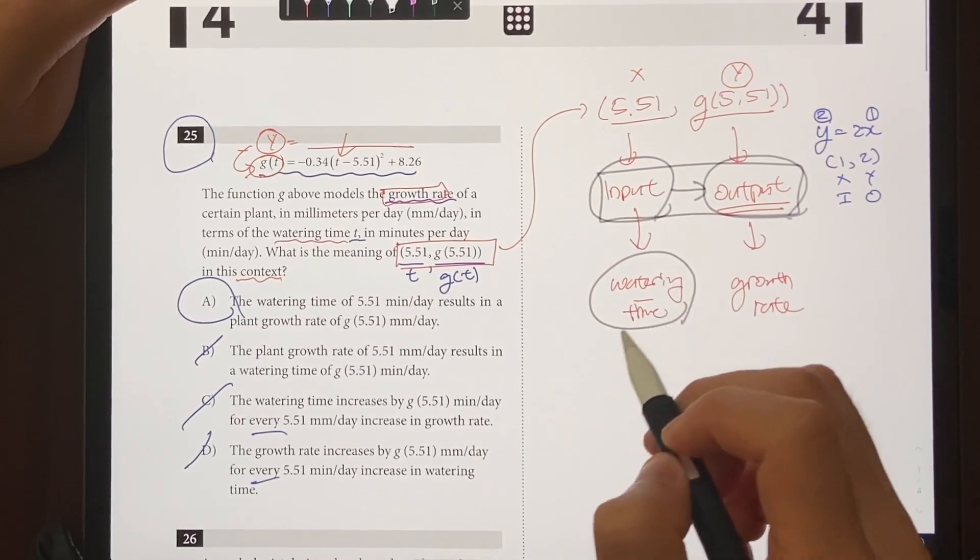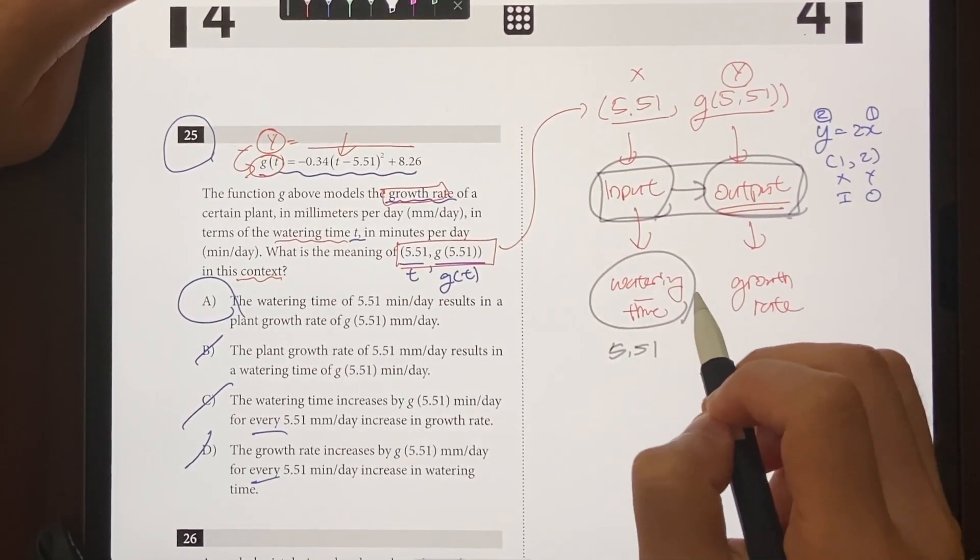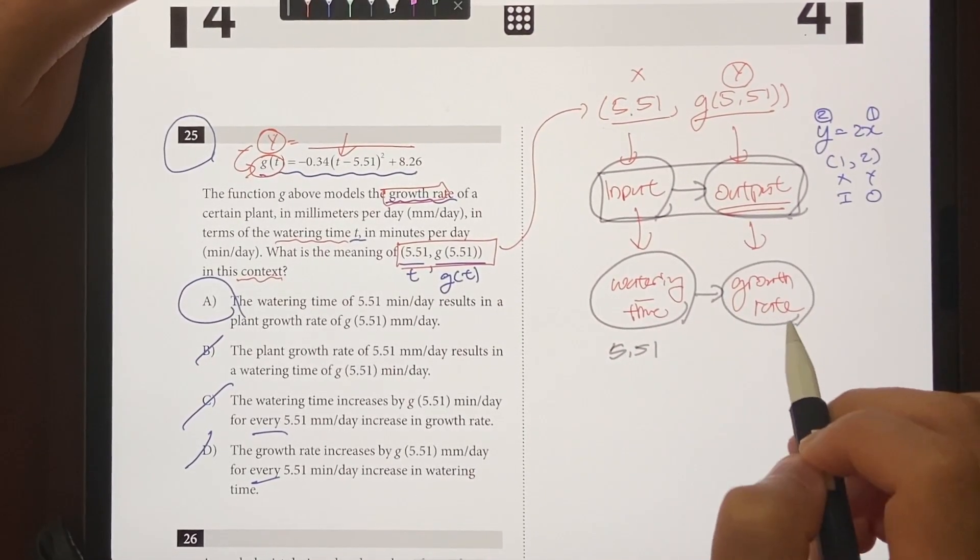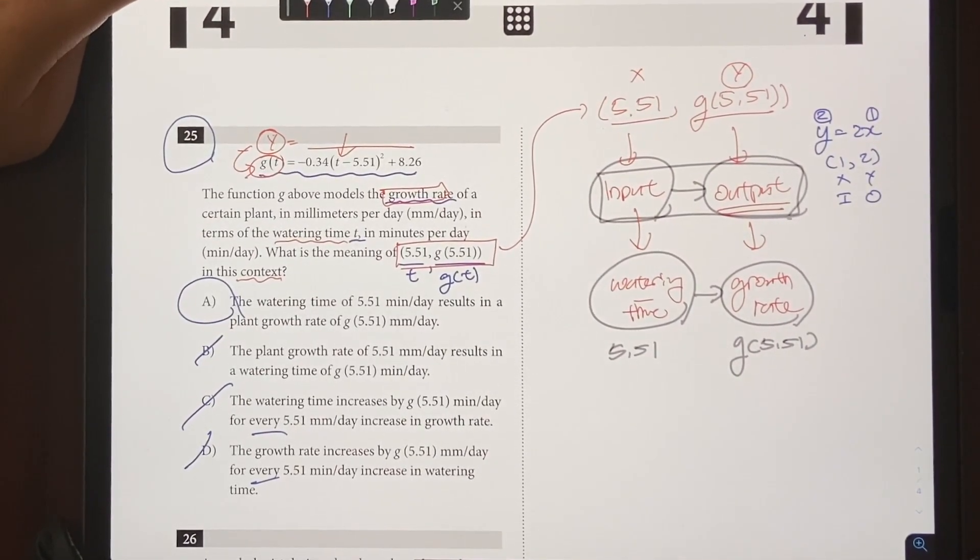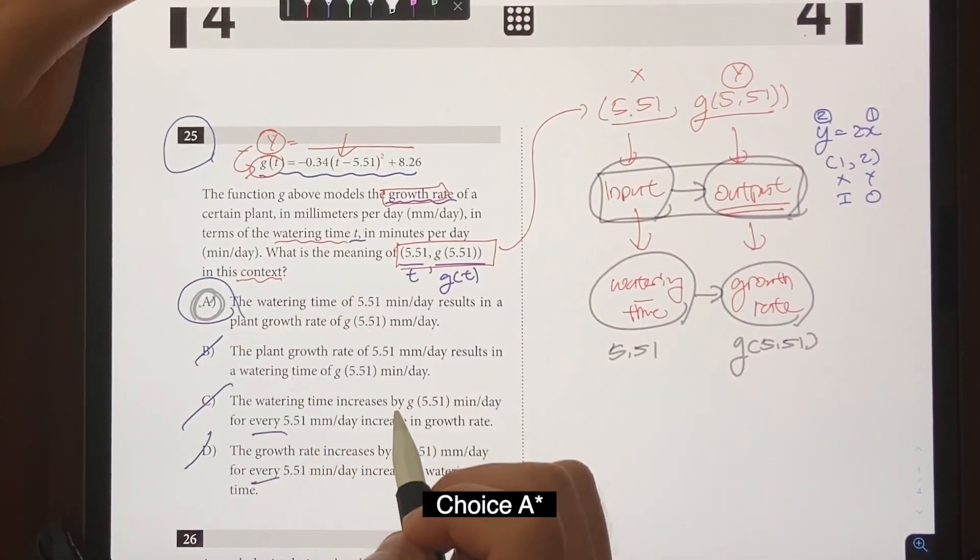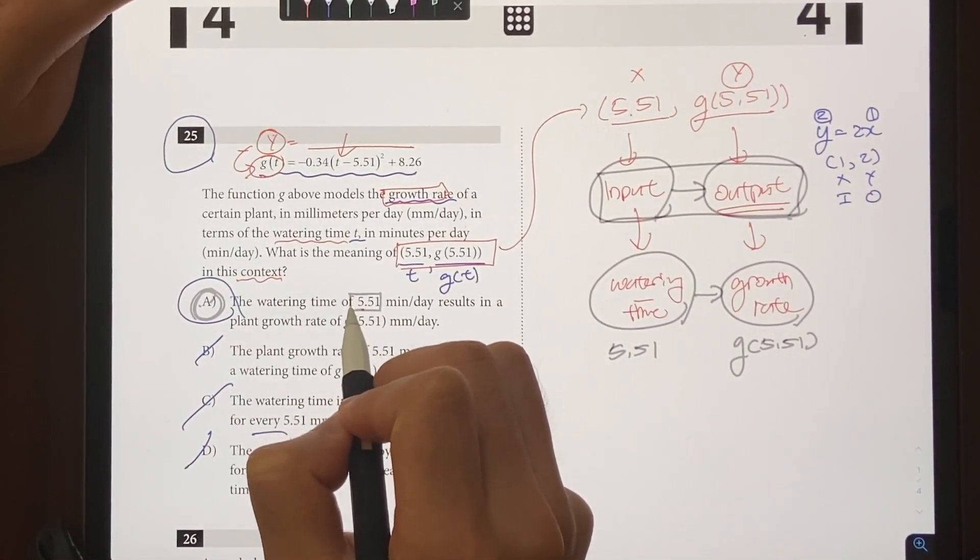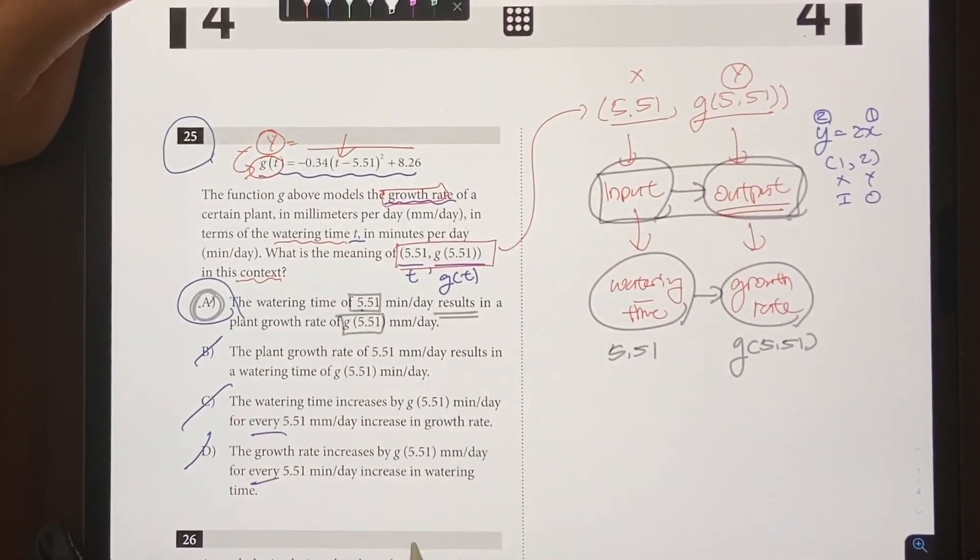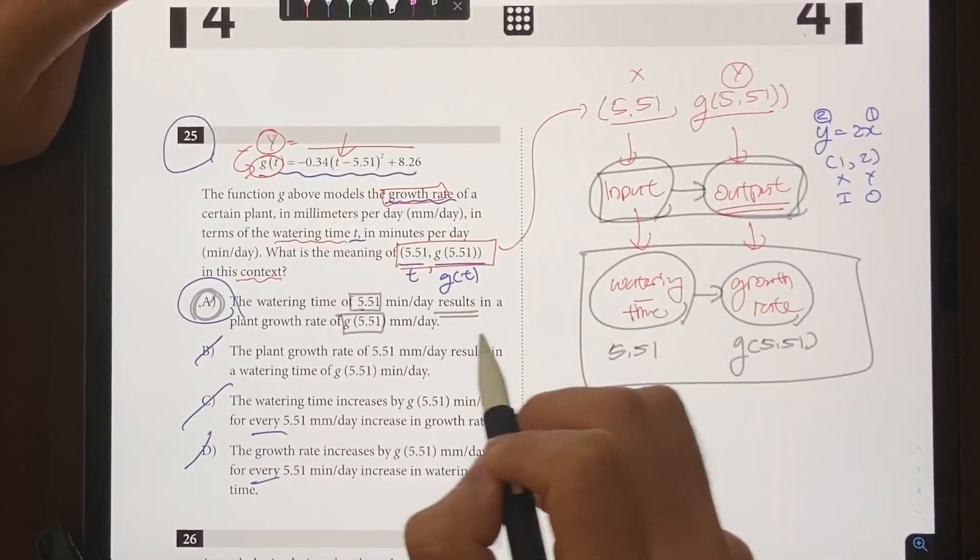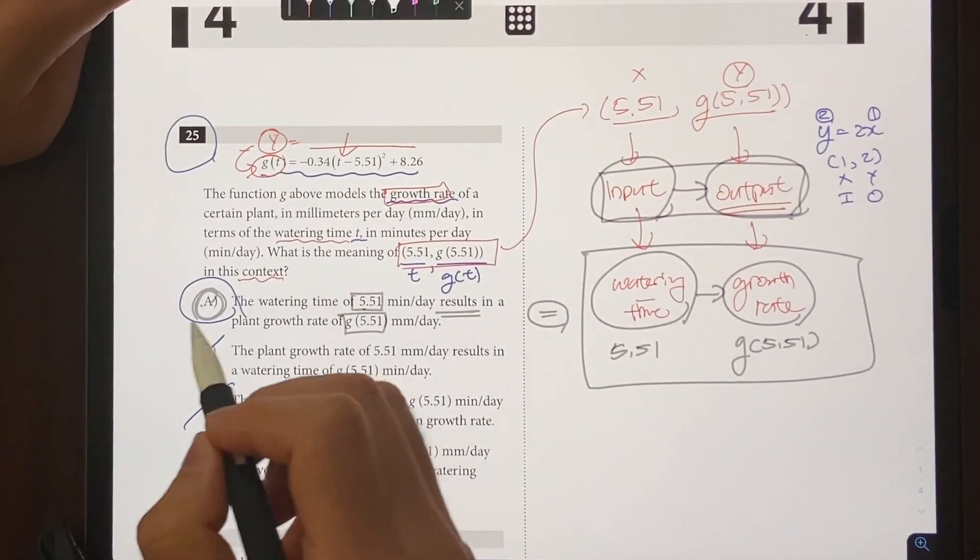When your watering time is 5.51, your resulting growth rate is going to be g(5.51). And the only choice that correctly says that is going to be choice A: when the watering time is 5.51, the resulting growth rate is going to be g(5.51), just like we said right there. They're the same thing, so A is going to be the answer.